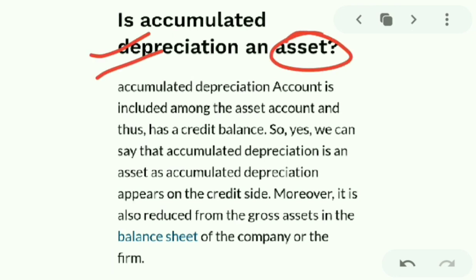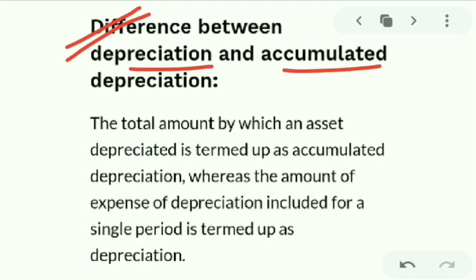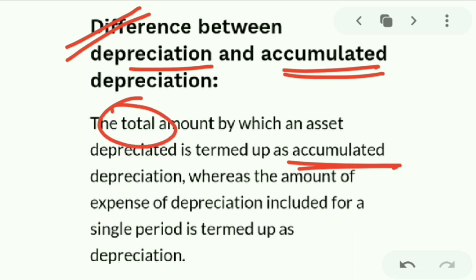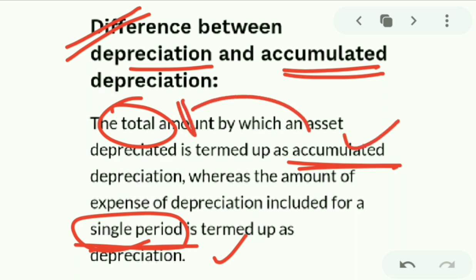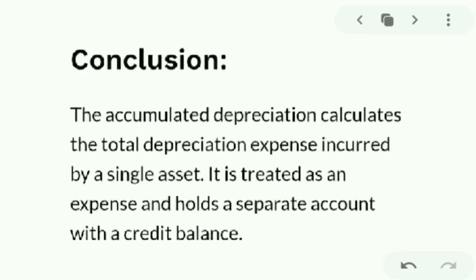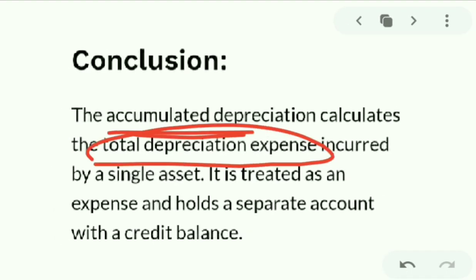Is accumulated depreciation an asset? Yes, accumulated depreciation is included in the asset accounts, so it can be considered an asset and it appears on the credit side. The difference between depreciation expense and accumulated depreciation: depreciation expense is the amount for a single period, while accumulated depreciation is the total of all depreciation recorded to date.